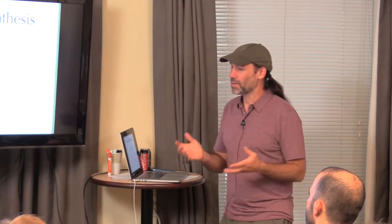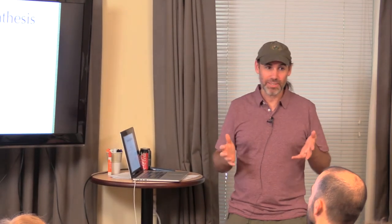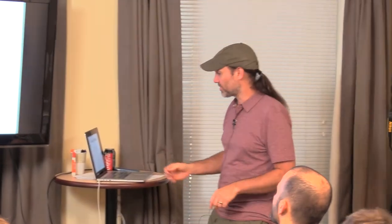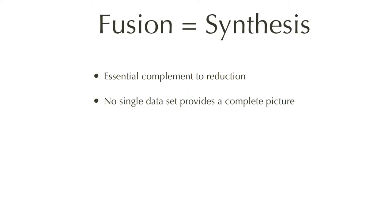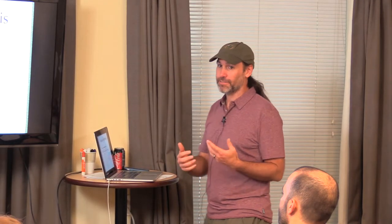One important thing about data fusion is that fusion is fundamentally about synthesis — bringing multiple sources of information together. Synthesis is a key complement to forecasting; we need to do good forecasts and good synthesis. Synthesis is a complement to reductionist science, and it deals with the fact that in virtually every system we study, no single data set provides the complete picture of how that system works. Often, ecological processes have multiple parts with information on different components.